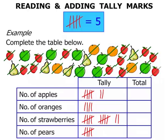We now total them up. The number of apples: there's a five and a two, that's seven. Number of oranges: simply four. Number of strawberries: we've got two fives, that's ten, and two more makes twelve. And finally the number of pears: simply five. Excellent — that concludes the lesson.